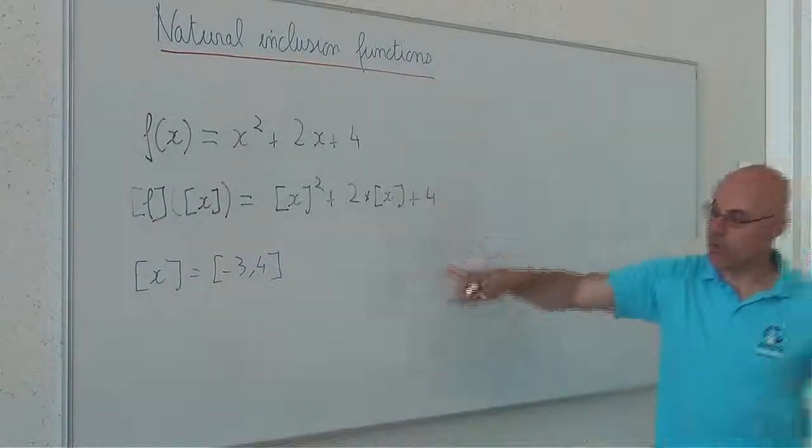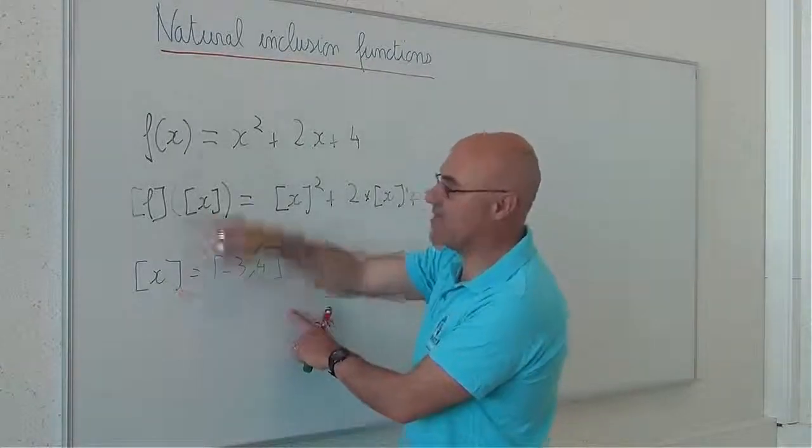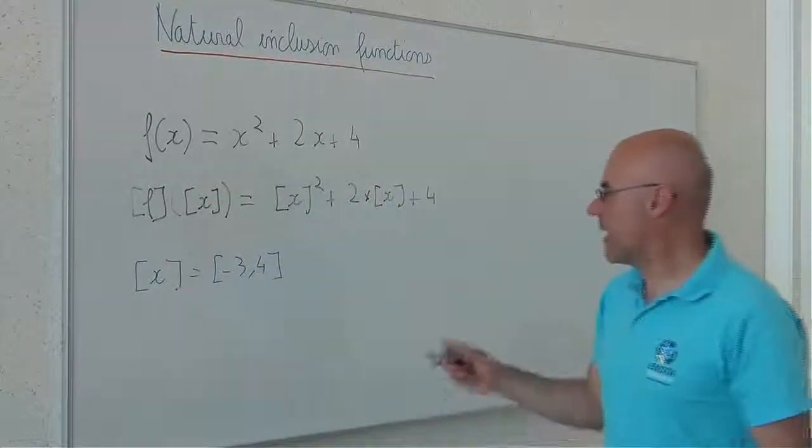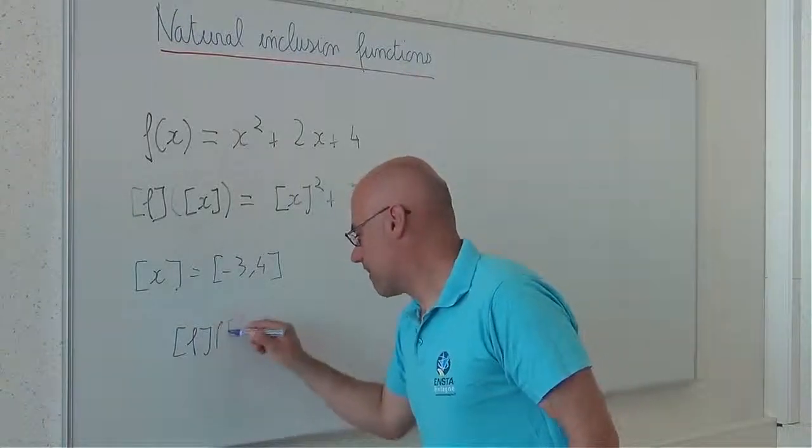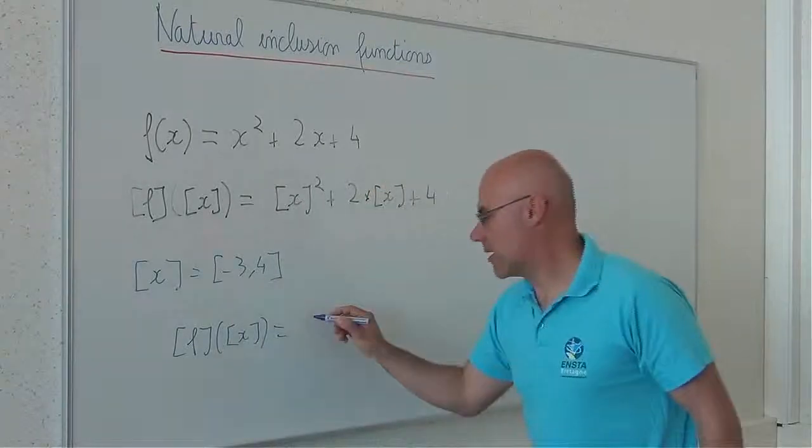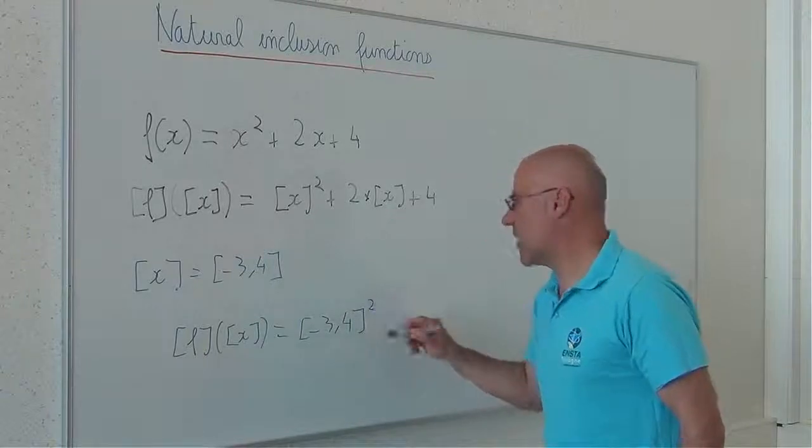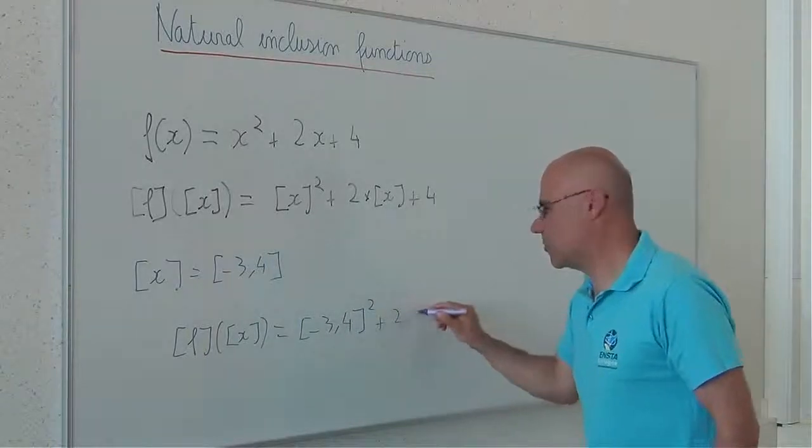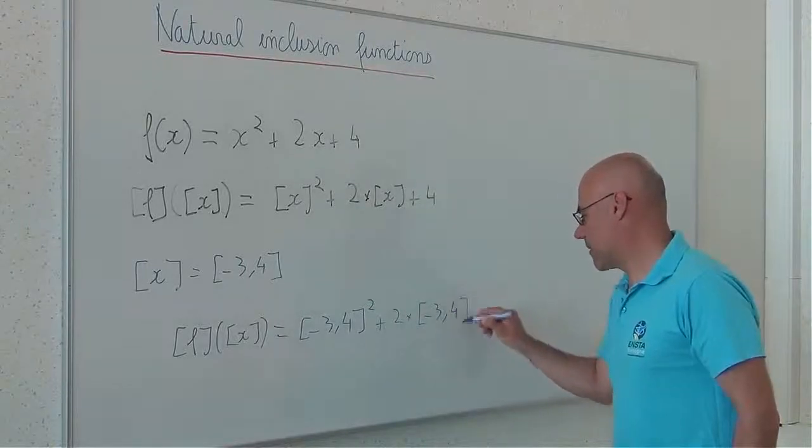How can I compute an enclosure for the range of x by f? I will do f of [x] is equal to [-3, 4] square plus 2 times [-3, 4] plus 4.